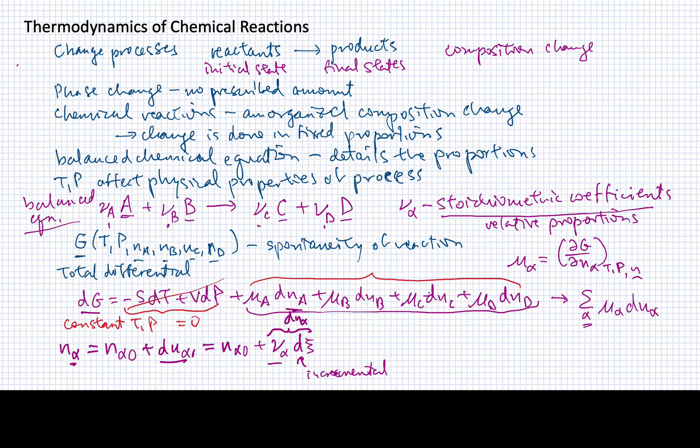Now, the other thing I want to specify here is that we often let this ν_α be less than zero for reactants. So in other words, the reactants are going away. They're losing moles. So this is going to be reflected by having a negative sign in that stoichiometric coefficient. And ν_α will be greater than zero for products.